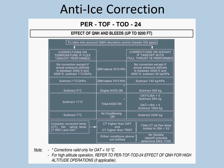Anti-ice correction: engine anti-ice was given as on. From the FCOM performance takeoff data table 24 — effect of QNH and bleeds up to 9,200 feet — engine anti-ice on requires subtracting 5°C. However, there is a note: this correction is valid only for OAT less than 10°C. Since the OAT in this question is 25°C, this correction does not apply. At 25°C you would not be using engine anti-ice anyway.